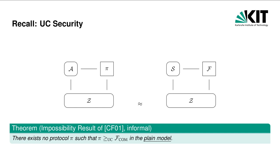Unfortunately, UC security comes with a major drawback. In the plain model, where only authenticated communication and arbitrary complexity assumptions are available, it is impossible to construct a UC-secure commitment scheme. This was recognized by Canetti and Fischlin. If the committer is corrupted, the simulator must extract the committed value, breaking the hiding property. At the same time, a corrupted receiver must not break the hiding property of an honest party's commitment. If the receiver is corrupted, the simulator must produce a commitment it can open to an arbitrary value, contradicting the binding property. Canetti and Fischlin showed that achieving this is not possible in the plain model.